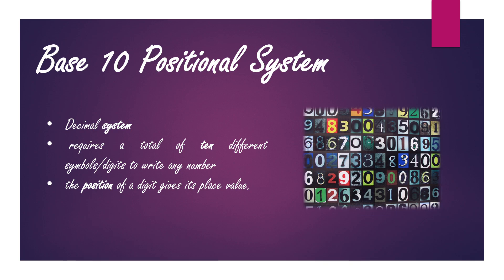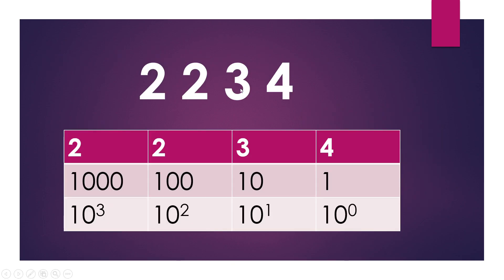The position of a digit gives its place value. Let's suppose we have a number 2, 2, 3, 4 and I want to know what is this 4. So if this is a decimal number, it must have a base 10. It is written in the power of 10. So the first number is 10 raised to the power 0, the second number is 10 raised to the power 1, then 10 raised to the power 2 and so on.